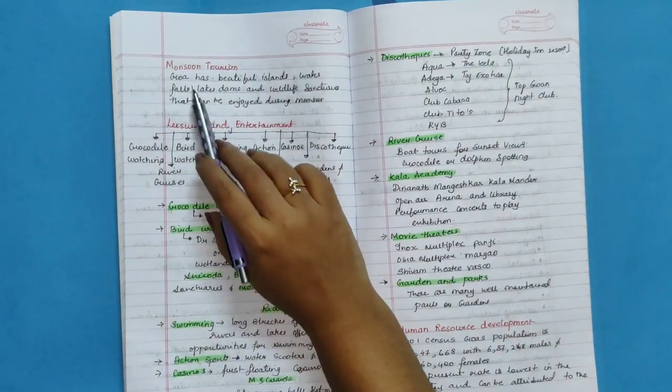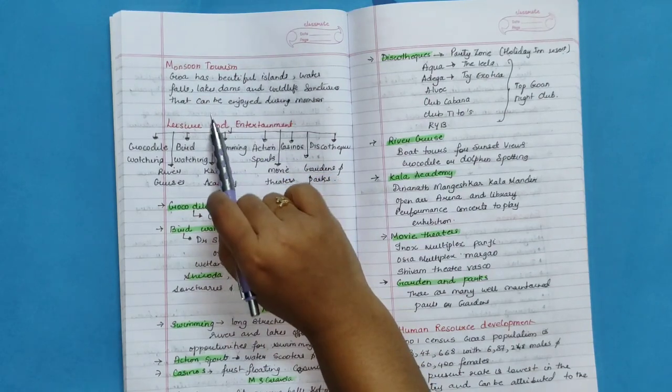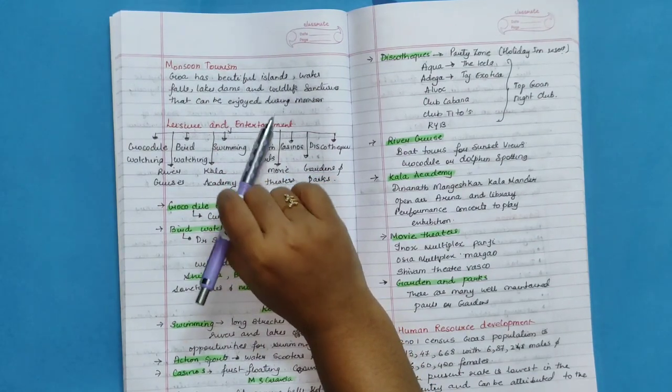Monsoon tourism. Goa has beautiful islands, water falls, lakes, dams and wildlife sanctuaries that can be enjoyed during monsoon.